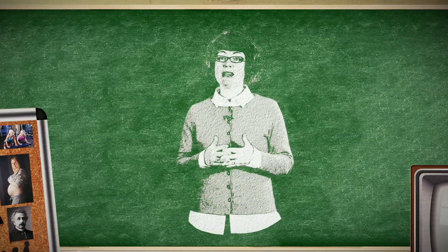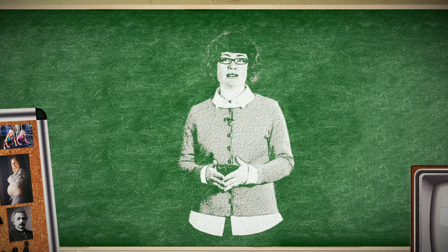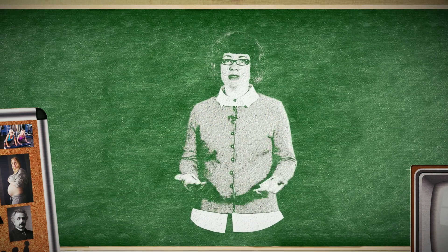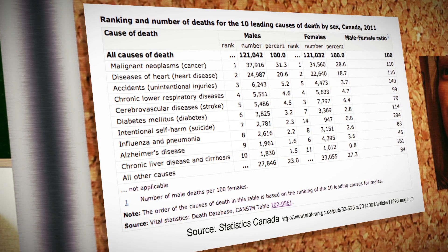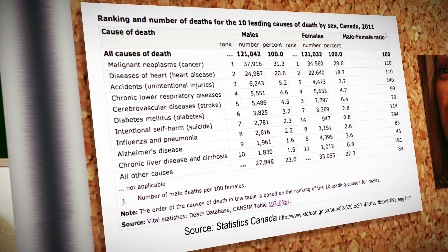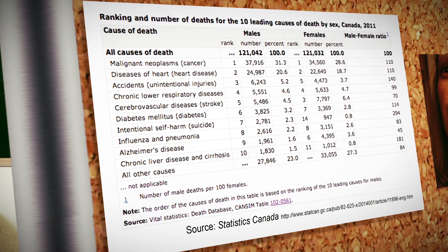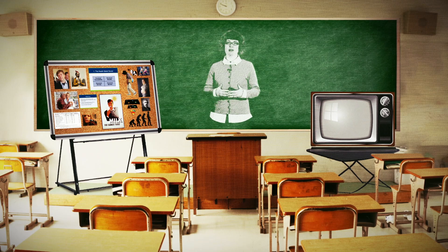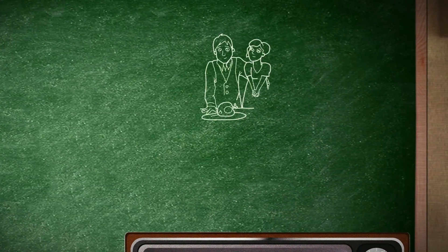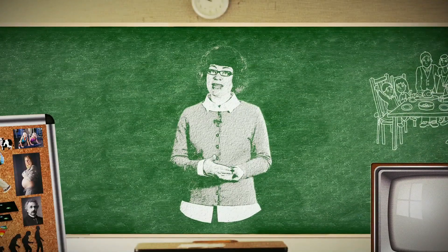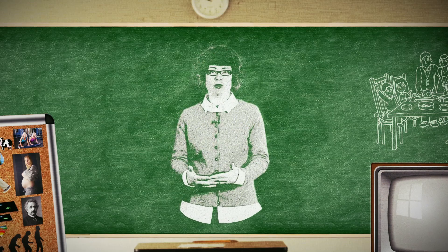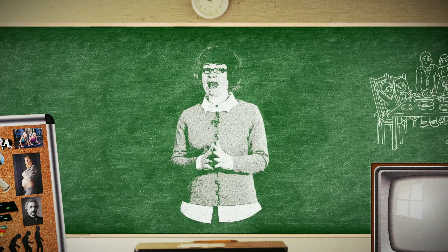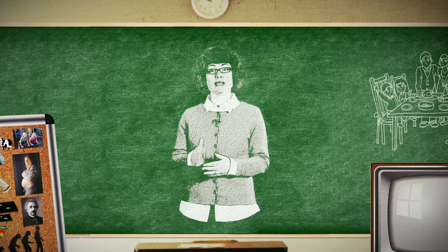Let's turn our attention to why theories about health behavior are so important. We want to promote health and well-being. Consider the leading causes of death in Canada — things like cancer, heart disease, stroke, and diabetes. Our health-related behavior plays an important role in whether or not we develop these conditions. So many aspects of our behavior influence our health status, not the least of which is our dietary habits. Understanding human behavior and designing interventions aligned with what we know about behavior change can make efforts to promote health more likely to succeed.